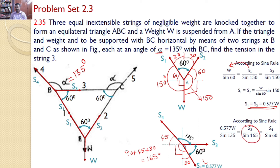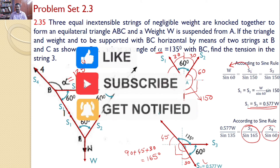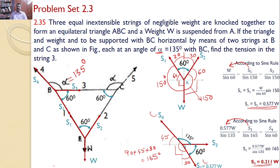Similarly, S4 divided by the angle between S3 and S1, which is 60°, so S4 / sin 60. Our interest is to find S3. Taking the relevant two expressions: S3 = (0.577W / sin 135) × sin 165, which gives the value of 0.211W.